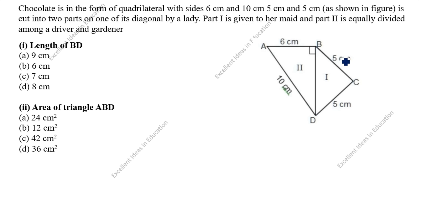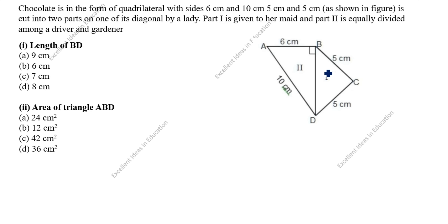You see here: 6 centimeter, 5 centimeter, 5 centimeter, and 10 centimeter. It is cut into two parts along one of its diagonals by a lady. Part one is given to her mate, and part two is equally divided among the driver and gardener.